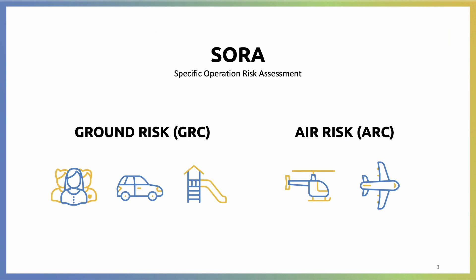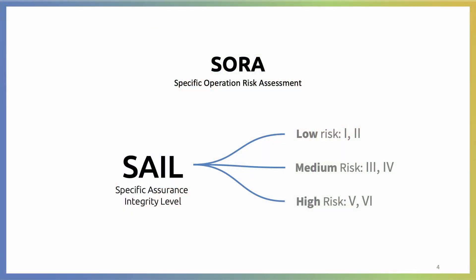For flying in the specific category, we will have to go through what we call a Specific Operation Risk Assessment. This basically entails evaluating the risk — the ground risk first, which means what do we have underneath the drone all the time? Are we above a crop or are we above a demonstration of people in the middle of the city? The second thing we have to do is take into account the air risk: are we flying in the middle of nowhere or are we flying in a controlled airspace? Based on that, we can propose some mitigations to decrease the risk of these two things. And at the end, we're going to get a SAIL number, which stands for Specific Assurance Integrity Level.